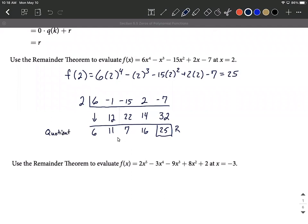So listing out the quotient, that last digit is going to be a constant. Then we go x, x to the second, x to the third as we kind of build this up. So we could write out our quotient as 6x to the third plus 11x squared plus 7x plus 16 with a remainder of 25.